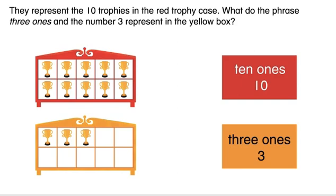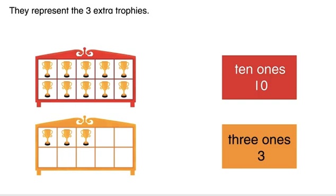What do the phrase 3 ones and the number 3 represent in the yellow box? They represent the three extra trophies.